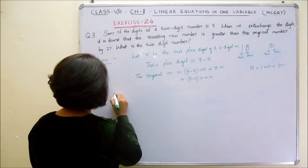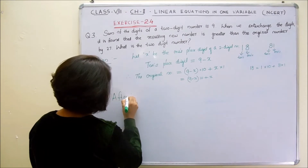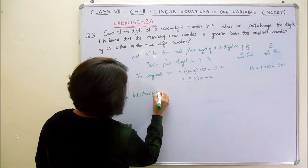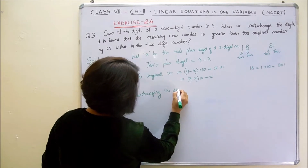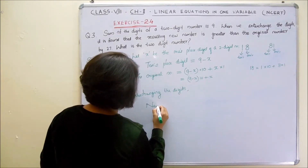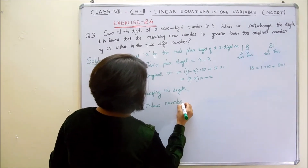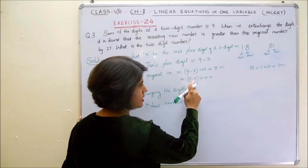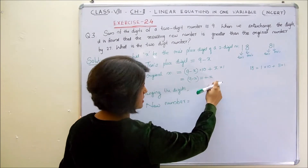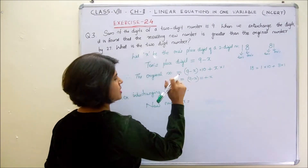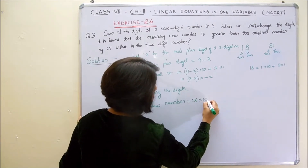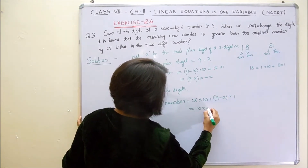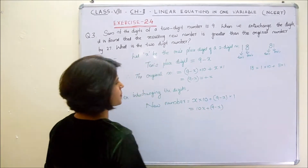And what would be the new number after interchanging digits? Here we have to interchange these digits: the tens digit becomes the units digit and the units digit becomes the tens digit. So the new number would be x into 10 plus (9 minus x) into 1, that is 10x plus 9 minus x.